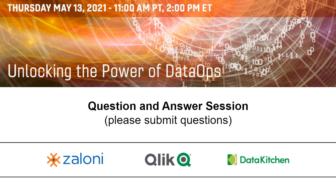Chris, what would be the first DataOps step to implement to make the most impact? What we try to do is work with customers to figure out what lever they want to push first — do they want to reduce errors in production, deploy quicker, or stop the meeting craziness and improve analytic team collaboration? Our customers are evenly divided on the first step, but they all want all three: less errors in production, getting ideas into development quicker, and working in an iterative and agile way — because they're focused on delivering value to their customer.